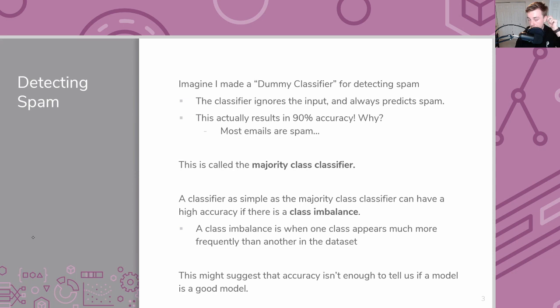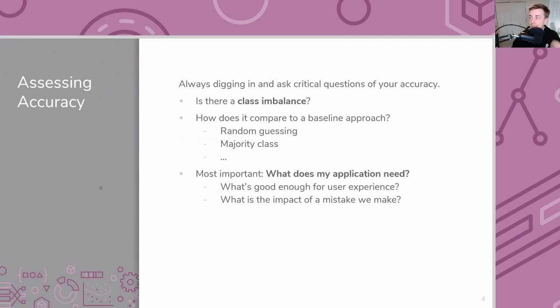When we introduced classification, we talked about how just minimizing classification error isn't always enough to know if your classifier is actually good. In particular, if you have a class imbalance, it's entirely possible to have a very simple classifier that gets high accuracy just by predicting the majority class. So sometimes we need to dive into what types of errors our model is making.